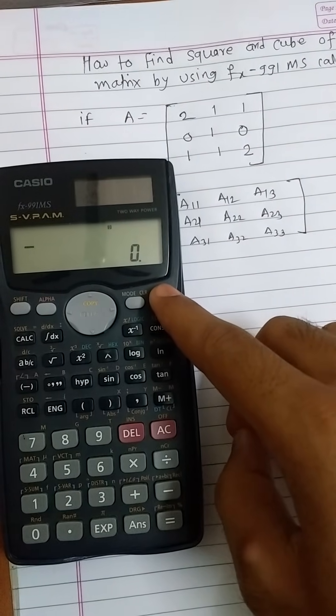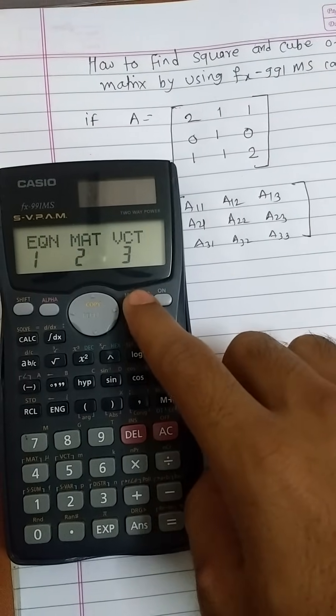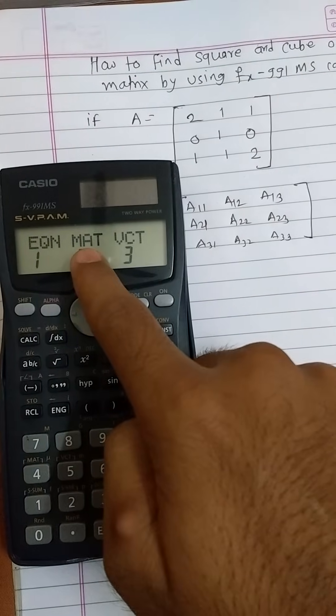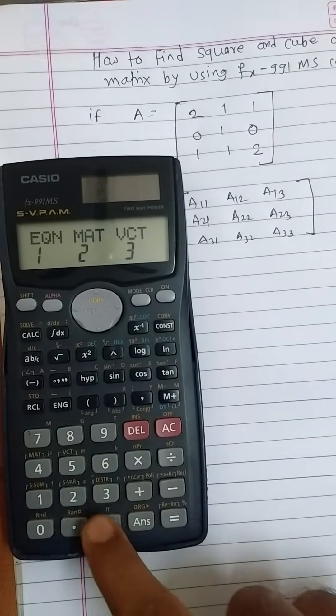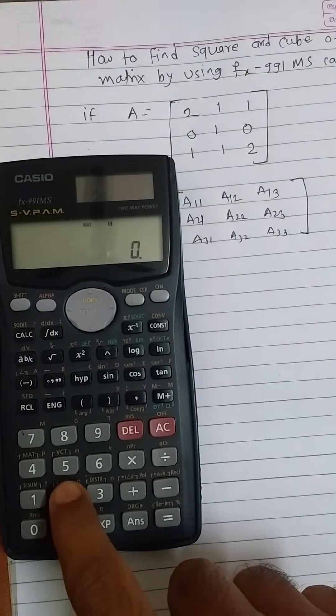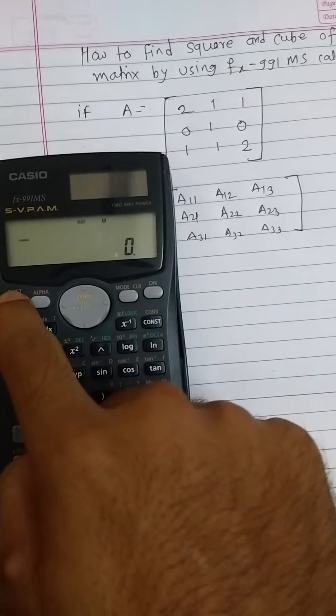Then we will see three options: equation, MAT, and VCT. To choose matrix mode, press button two. Then our calculator gets converted into matrix mode. Then press shift and four to decide the dimension of the matrix.